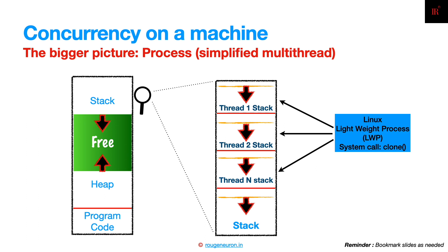Threads share the heap and program code segments. Each thread knows which set of instructions it needs to load, takes those addresses, and starts executing. That information is handed off to the thread at creation time, and we'll look at those syntaxes in upcoming lectures.